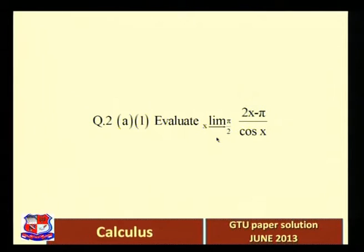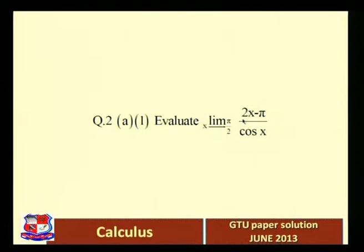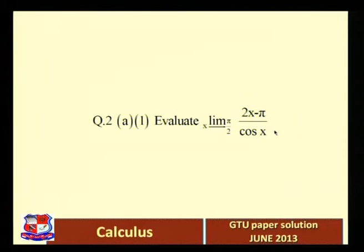We want to evaluate this limit as x tends to π/2 of (2x − π) / cos x. Now if we put x = π/2 directly: 2·(π/2) − π = π − π = 0, and cos(π/2) is also 0. So this makes a form of 0/0, and that's why we have to use L'Hôpital's Rule.